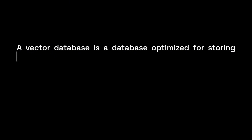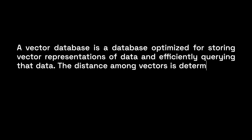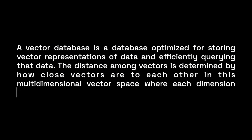Let's stop for a second here. What we've seen so far is that vector databases represent our data as vectors — or in other words, numerical data points — and that they determine similarity between these vectors mathematically, based on algorithms such as Euclidean distance and cosine similarity. A vector database is a database optimized for storing vector representations of data and efficiently querying that data. The distance among vectors is determined by how close they are to each other in this multidimensional vector space, where each dimension represents a feature of our data.